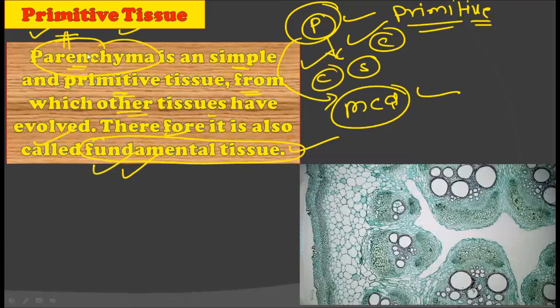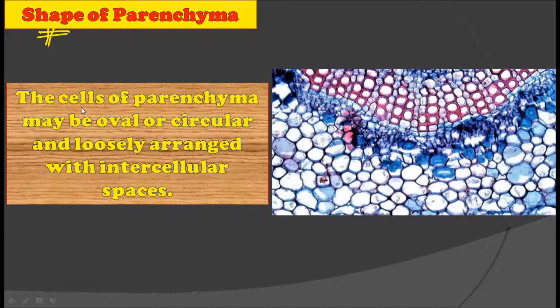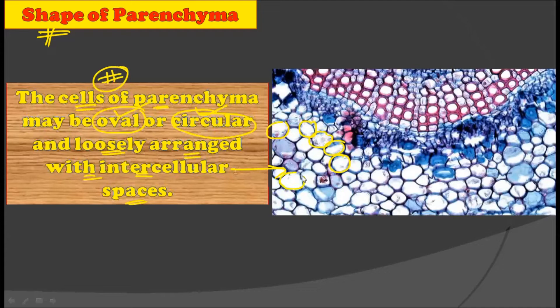Parenchymatous tissue is considered a primitive tissue because from it all other tissues have evolved, and that is why it is also called the fundamental tissue. Now let's consider the shape of parenchyma cells. The cells of parenchyma may be oval or circular in shape, as you can observe in this picture. They are loosely arranged with intercellular spaces — in the majority of cases these parenchyma cells are very loosely arranged, not compact.